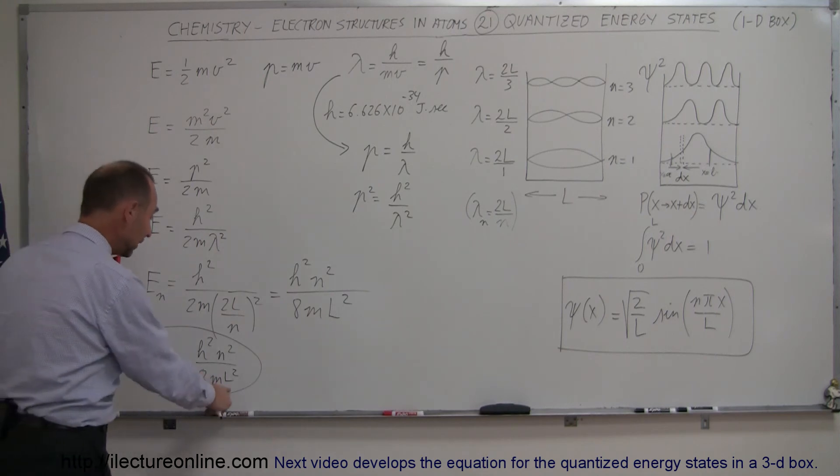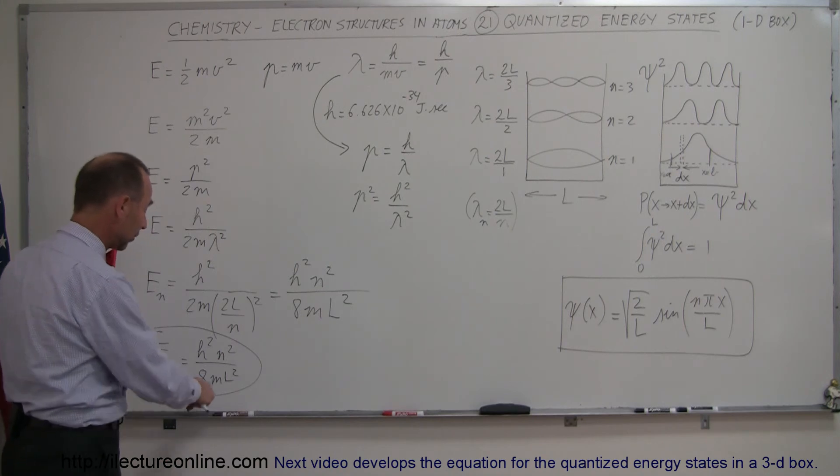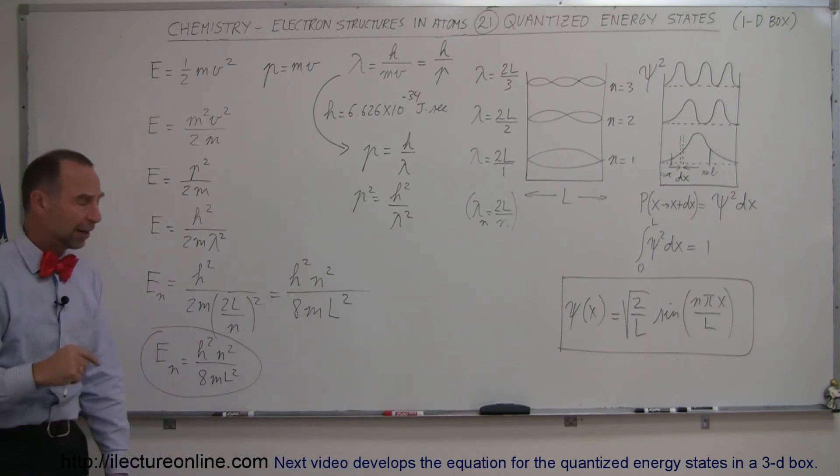That means, with a box of length l, an electron with mass of an electron, 9.1 times 10 to the minus 34 kilograms, can only exist in those particular energy states defined by the letter n, whatever energy state we're in.